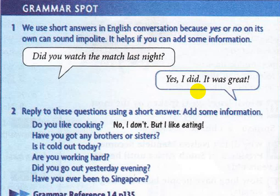Number two: reply to these questions using a short answer and add some information. For example: 'Do you like cooking?' — 'No, I don't, but I like eating.' You see, when we added more information like 'but I like eating', the sentence became more polite. 'Have you got any brothers or sisters?' — 'Yes, I have, I like my sisters and brothers.' Because the question started with 'have', we answer 'yes, I have.'